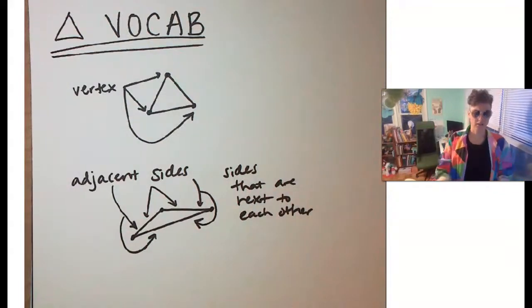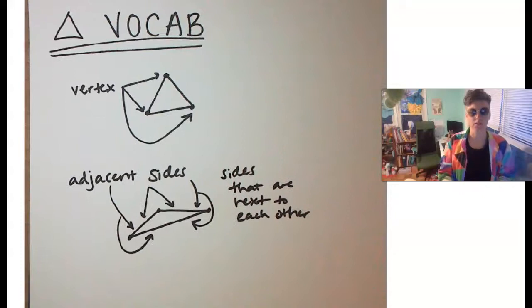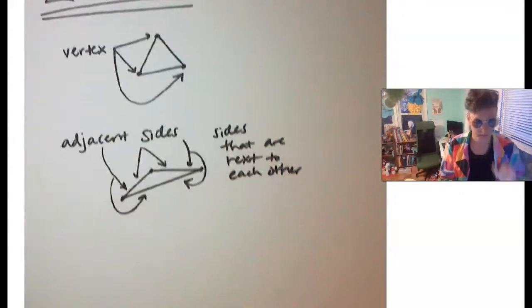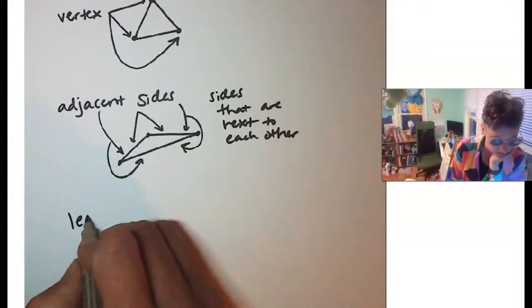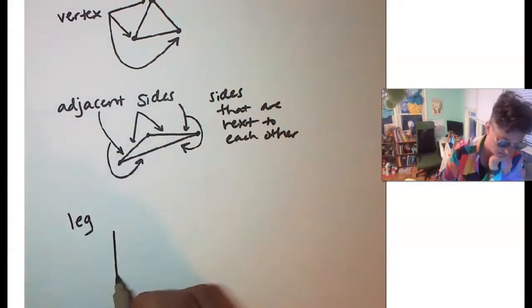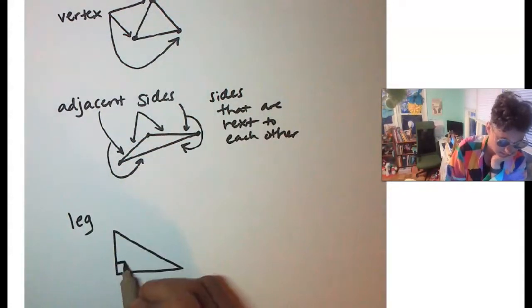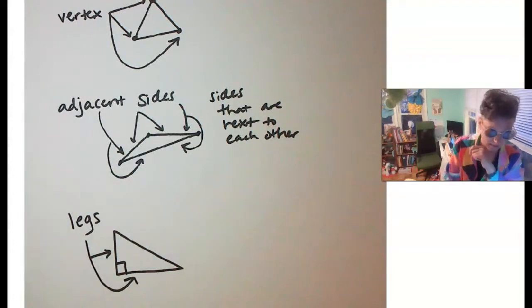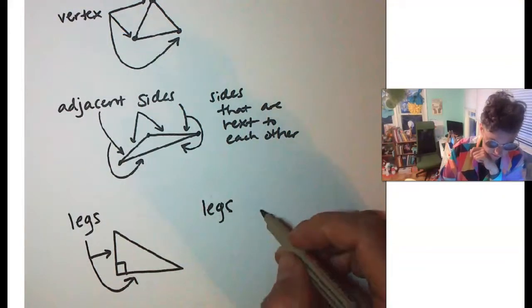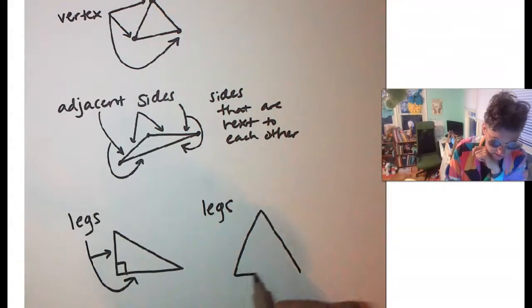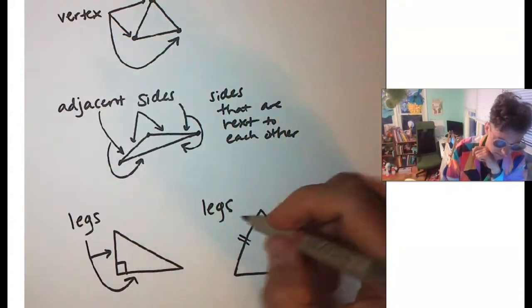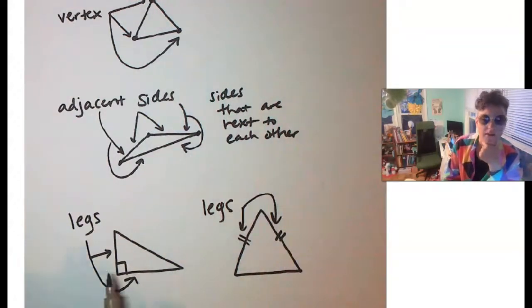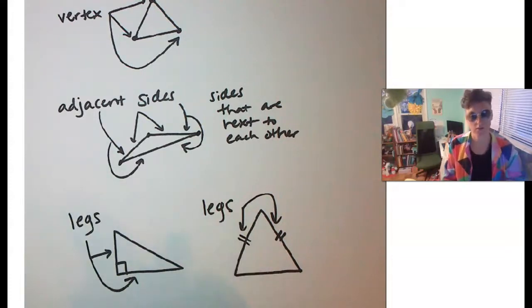Then we've got legs of a triangle — there are two different scenarios. We have legs in a right triangle: the non-hypotenuse sides are the legs. We also have legs in an isosceles triangle: those are the sides that are congruent to each other. So the non-hypotenuse sides of a right triangle are called legs, and the congruent sides in an isosceles triangle are called legs.